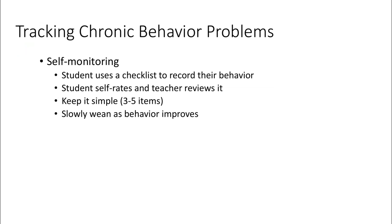Within this, there is a need to think about self-monitoring. If you have a contract with the student, you want to identify exactly how we're going to pay attention to whether or not the student attends to the specific elements in the contract. We're really building up the skill set for the student to think about their behaviors over time. In self-monitoring, we might have the student use a checklist to record their behavior. The student might self-rate and then the teacher would review this. We want to keep it simple — three to five items.